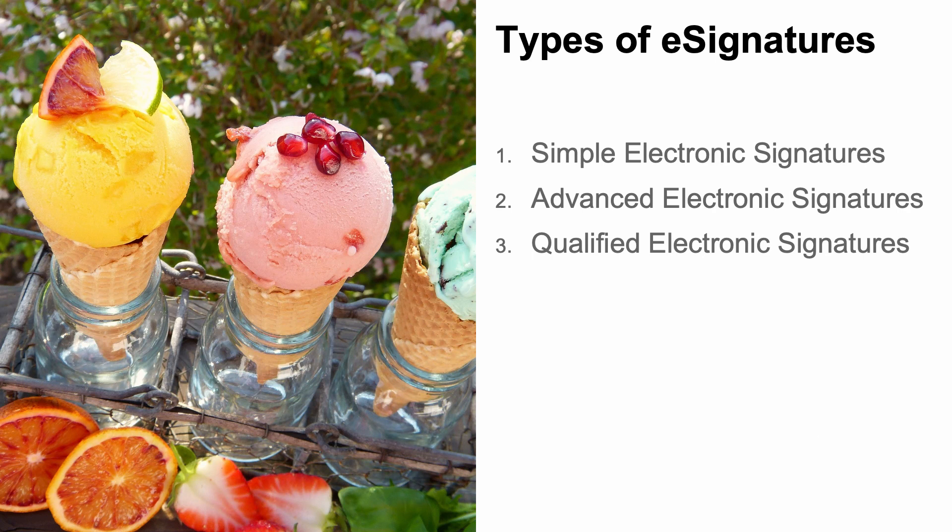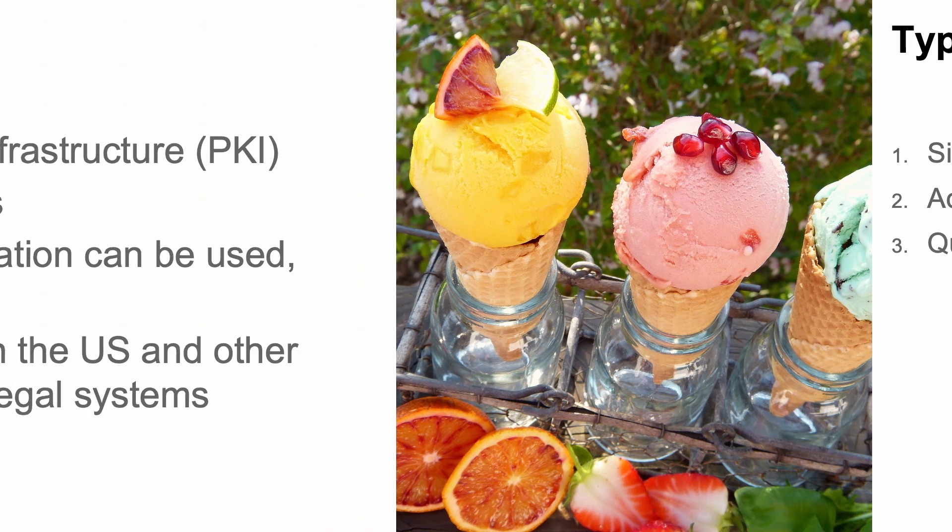There are three types of e-signatures. To describe them, we'll use the terminology of the E-IDIS regulations of the European Commission. There are simple electronic signatures, advanced electronic signatures, and qualified electronic signatures. Let's look into each type of signature.